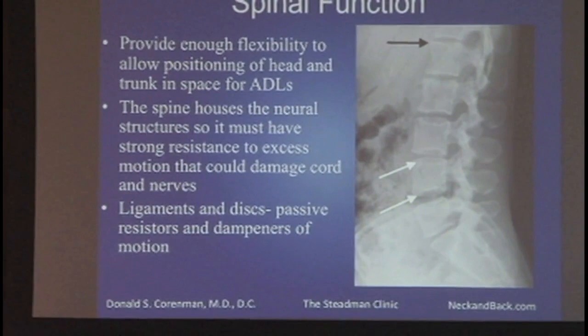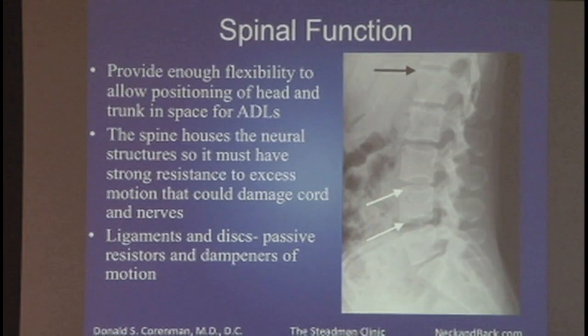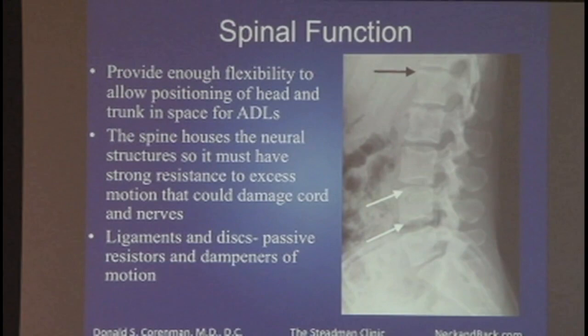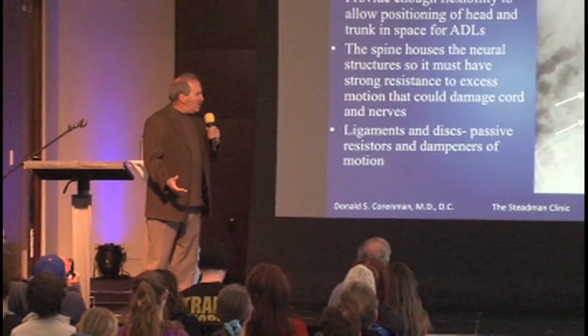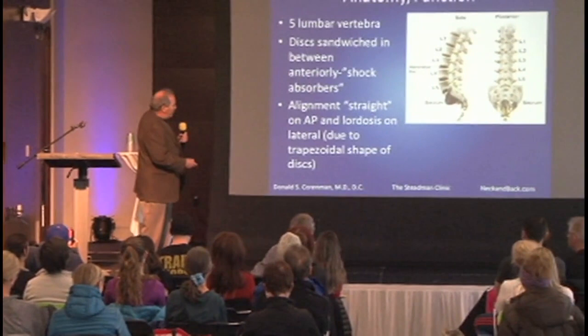The spine is an interesting structure. You have to have enough flexibility to allow positioning of the head, neck, and shoulders for daily activities — like tying your shoe or pulling a roast out of the oven. The spine also houses the neurologic structures, so it has to have strong resistance to excess motion that could damage the cord and the nerves. The ligaments and discs are passive resistors and dampeners of motion.